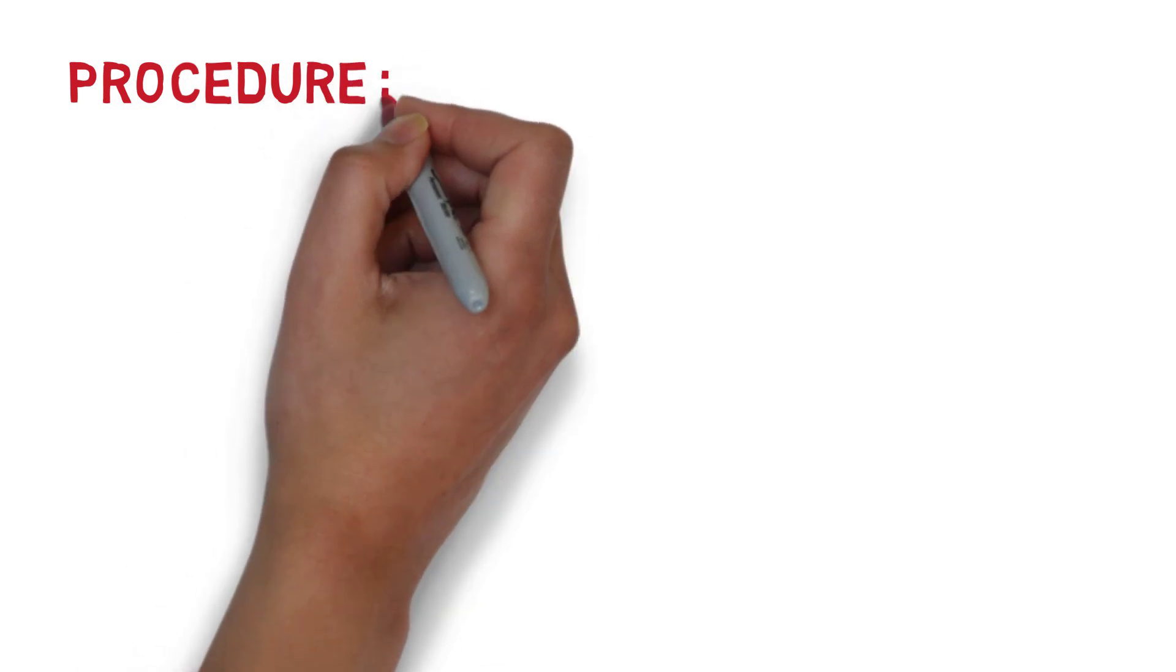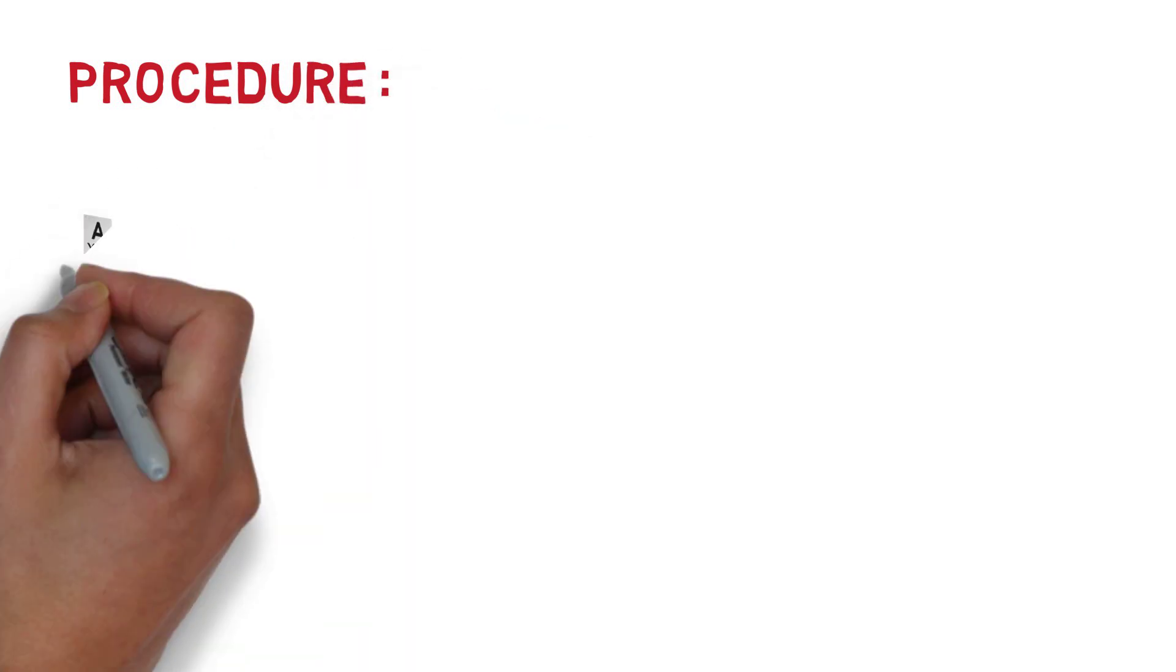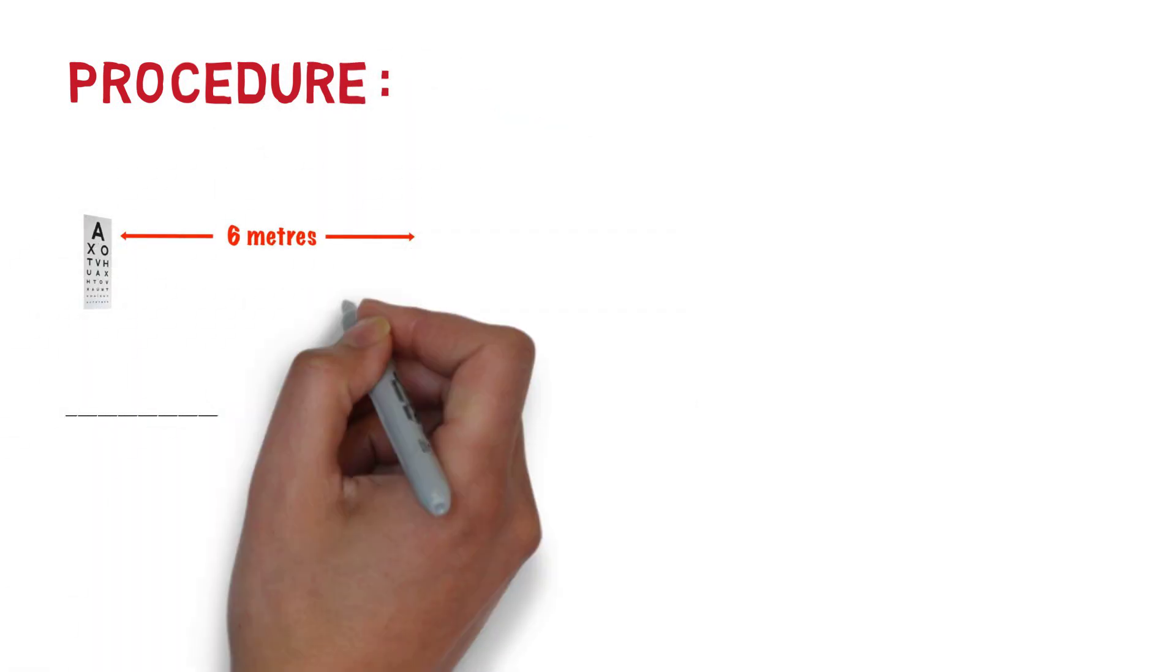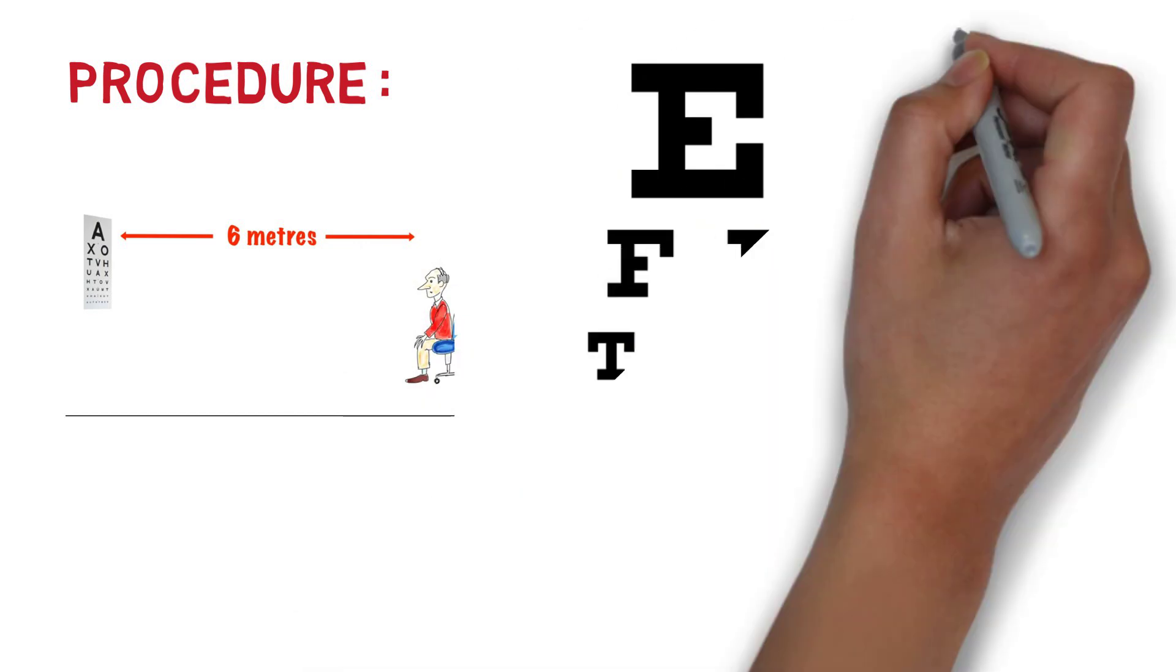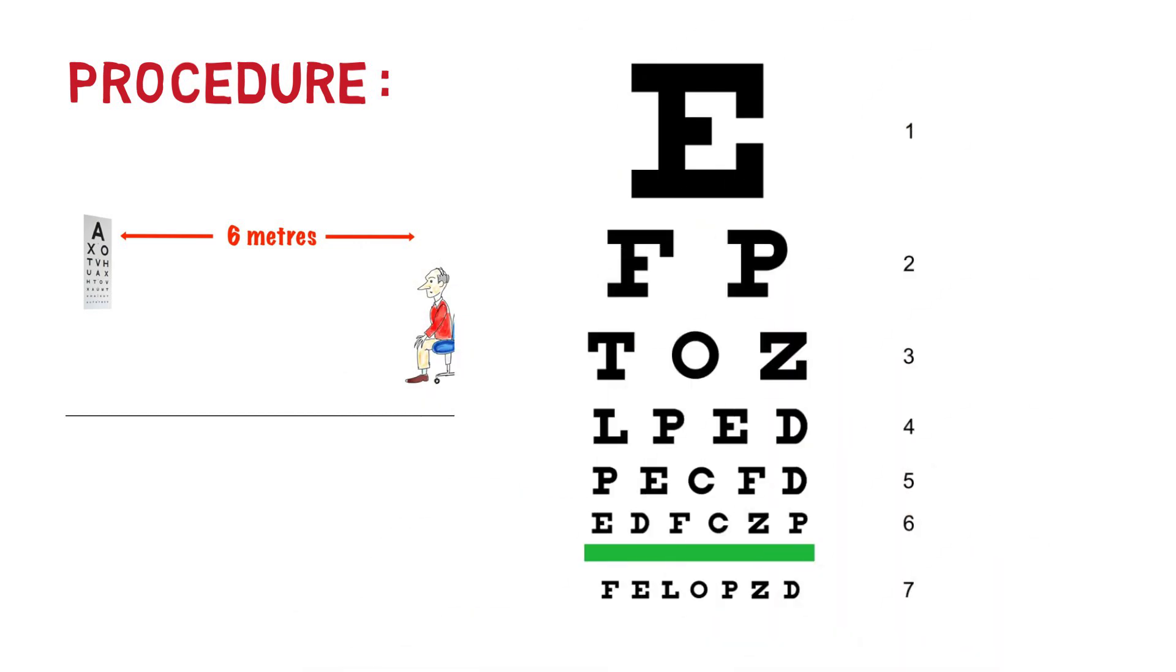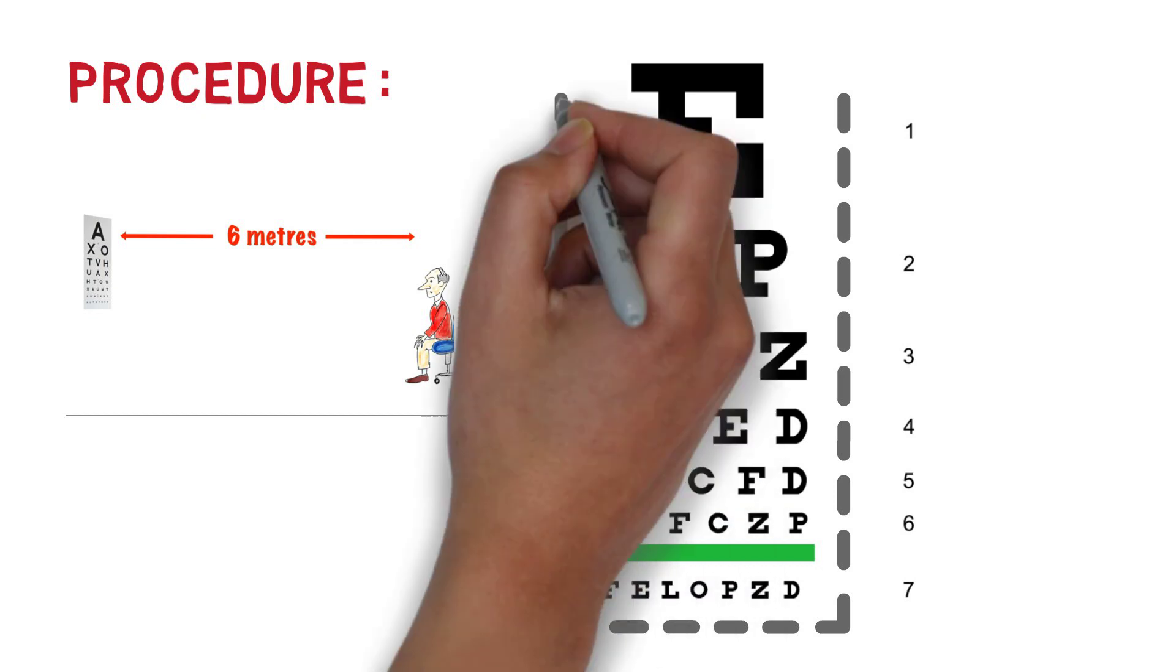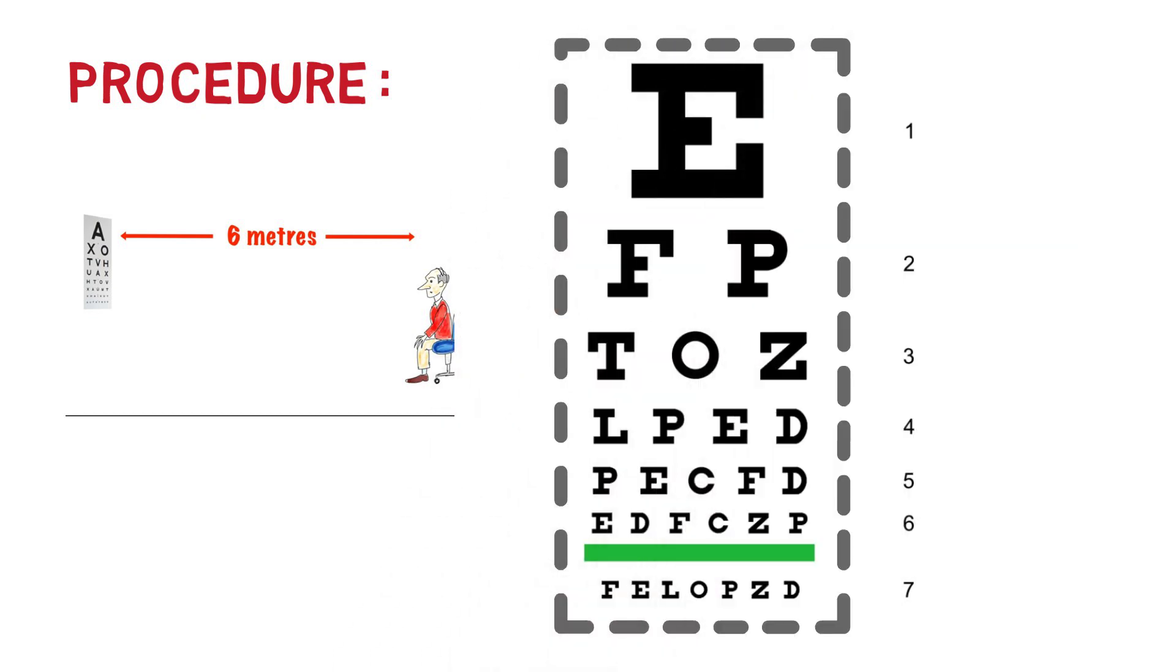Coming to the procedure of testing visual acuity by Snellen's test type. The patient is seated at a distance of 6 meters from the Snellen's chart and the chart is properly illuminated. The patient is asked to read the chart with each eye separately and the visual acuity is noted as a fraction.